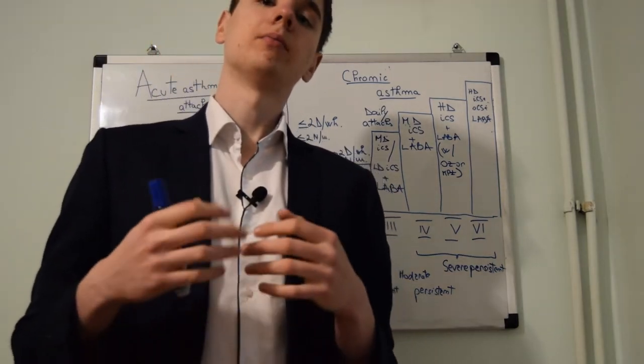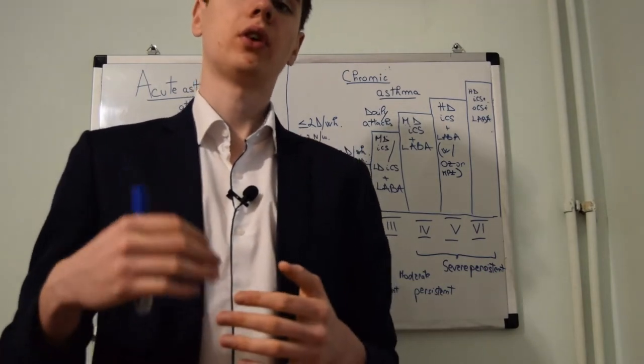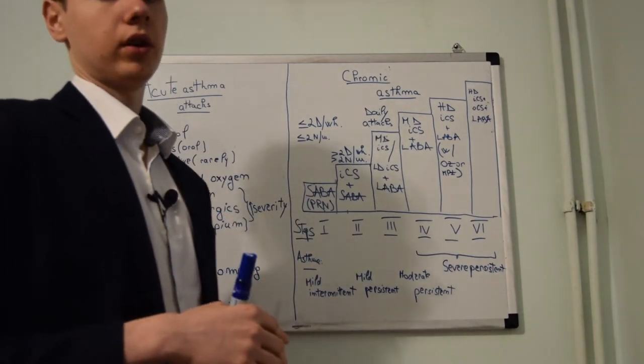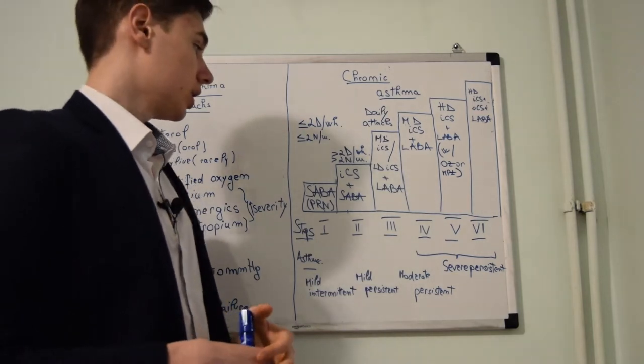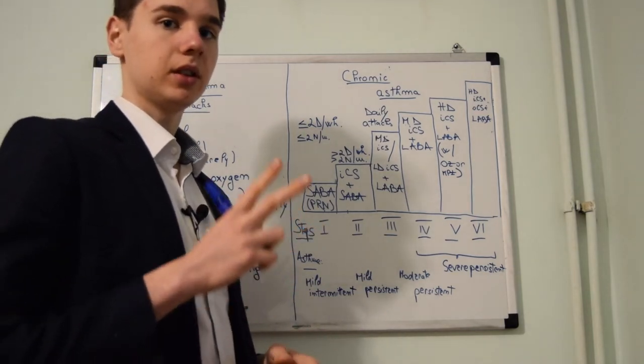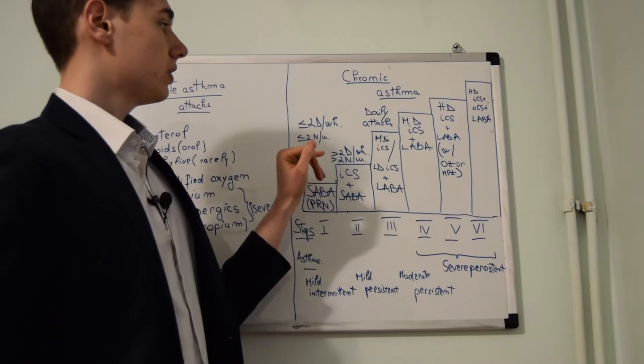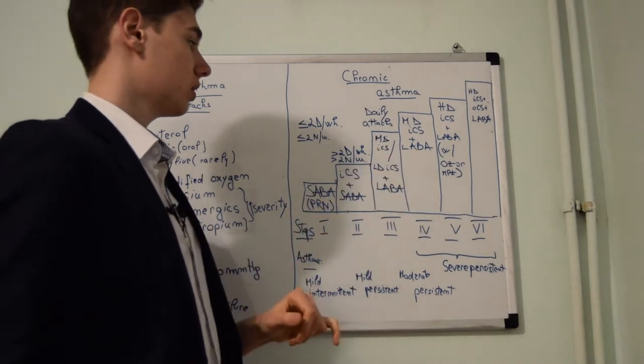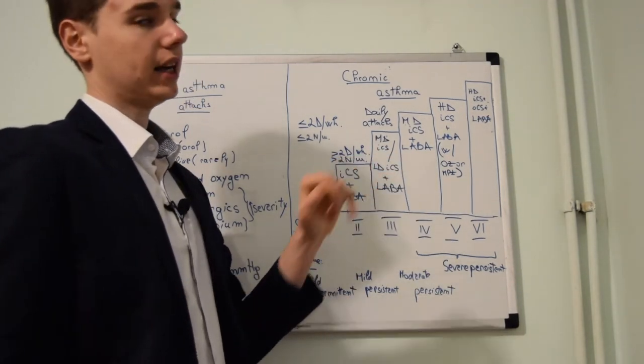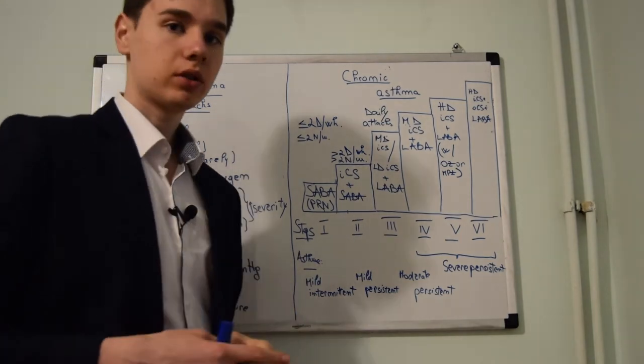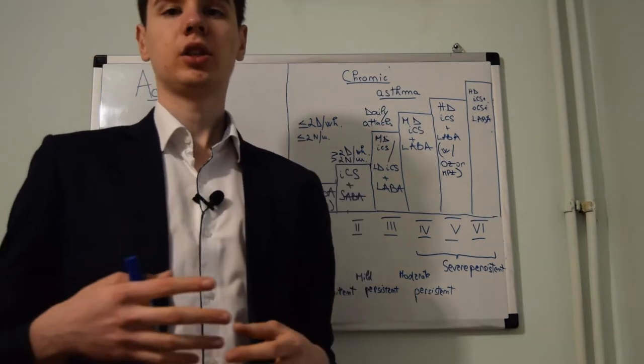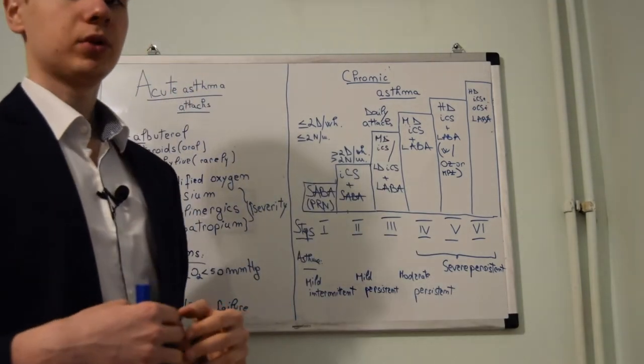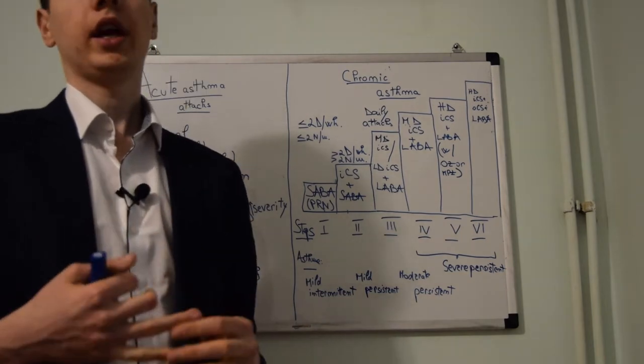Then there is moderate persistent asthma defined as daily asthma attacks. The management for moderate persistent asthma is represented by the third step in treatment: either a medium dose of inhaled corticosteroids or a low dose of inhaled corticosteroids with long-acting beta-2 agonists. The inhaled corticosteroids are medications such as fluticasone or budesonide. The long-acting beta-2 agonists are salmeterol and formoterol.